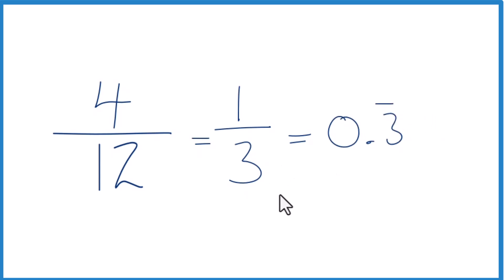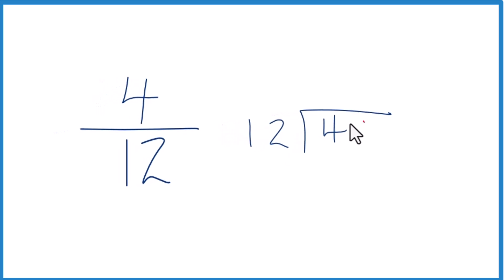There is another way we could do it. We could just take 4 and divide it by 12. So let's do that. We take 4, and we want to see how many times 12 goes into 4. 12 doesn't go into 4. We could call this 40 as long as we put a zero and a decimal point up here.